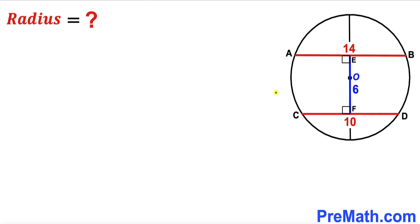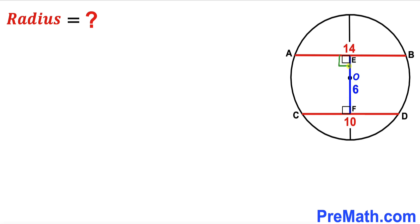Welcome to PreMath. In this video we have got a circle with center O that contains two chords AB and CD, such that chord AB is 14 units long whereas chord CD is 10 units. Moreover, the vertical distance between these two chords EF is 6 units long, and these angles are 90 degrees each. Our task is to calculate the radius of this given circle.